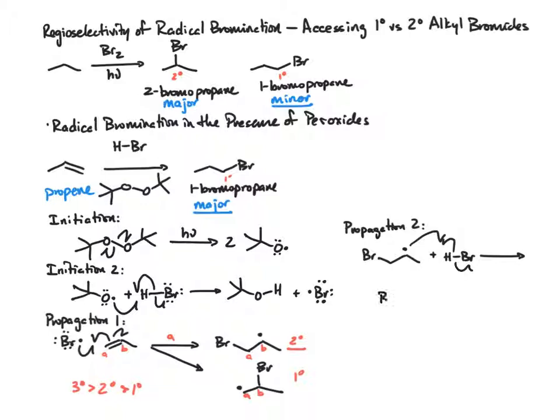That's going to generate our product plus bromine radical. This is the propagating radical that funnels back into the first propagation step, adding to propene.